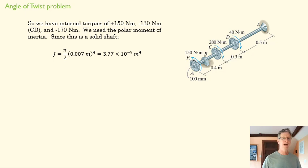So we find that we have an internal torque of positive 150 in this section, negative 130 in that section, and negative 170 in that section. We want to find our polar moment of inertia, which is just a function of c. There's our radius of 0.007 meters, which gives us our value for the polar moment of inertia.